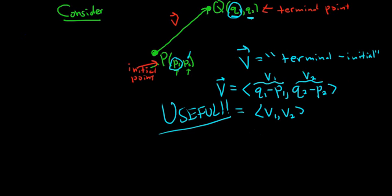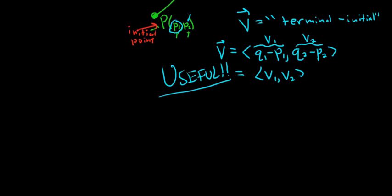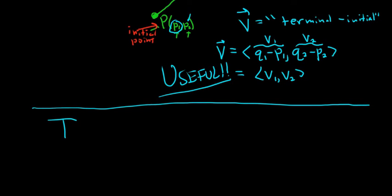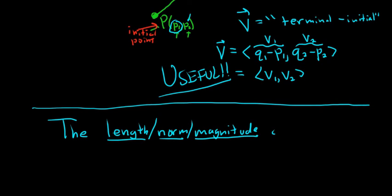All right. There's a couple formulas. Sometimes we're interested in finding what's called the length of the vector. So the length. It's also called the norm. It's also called the magnitude. So lots of names for the same thing. Length, norm, magnitude of a vector.